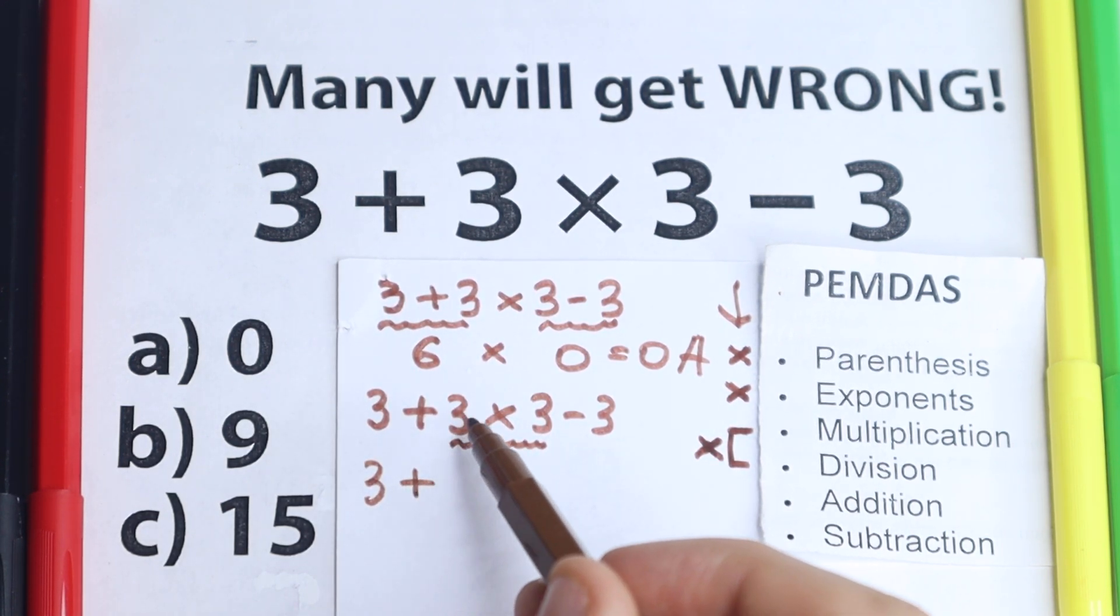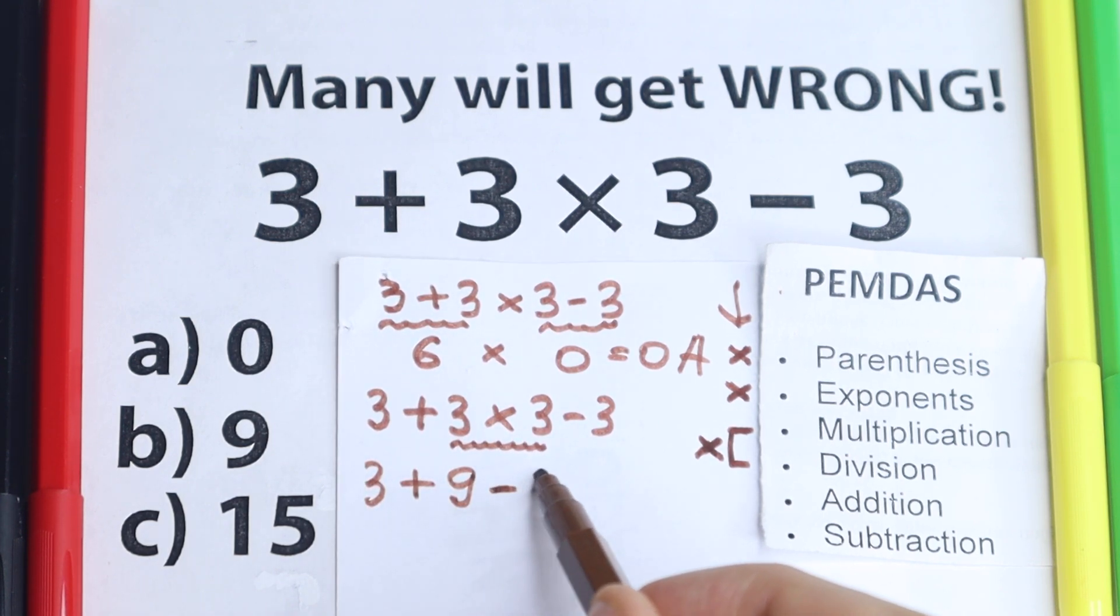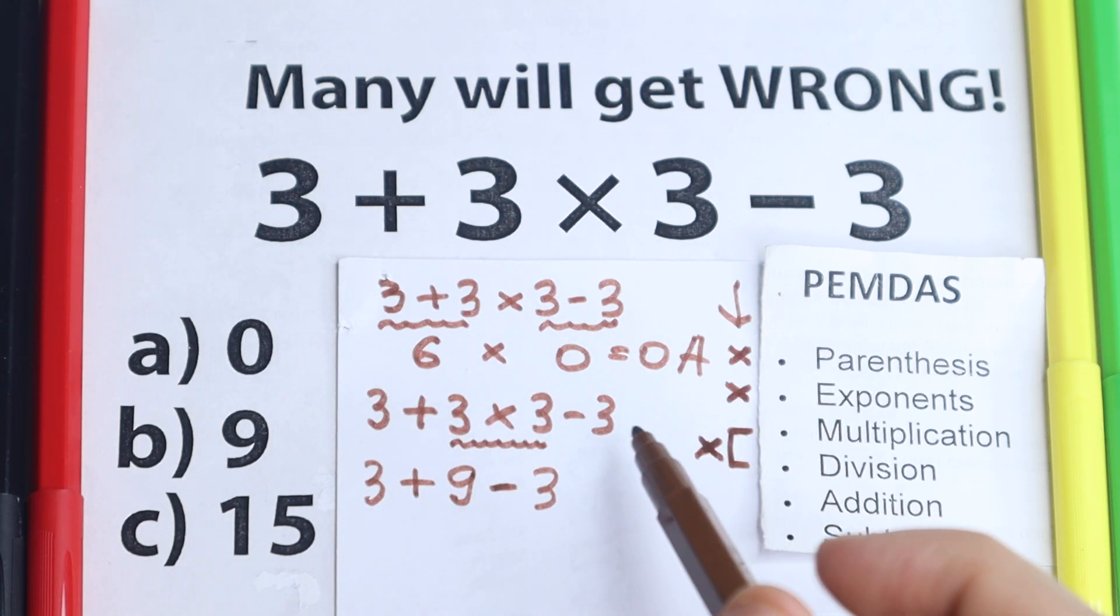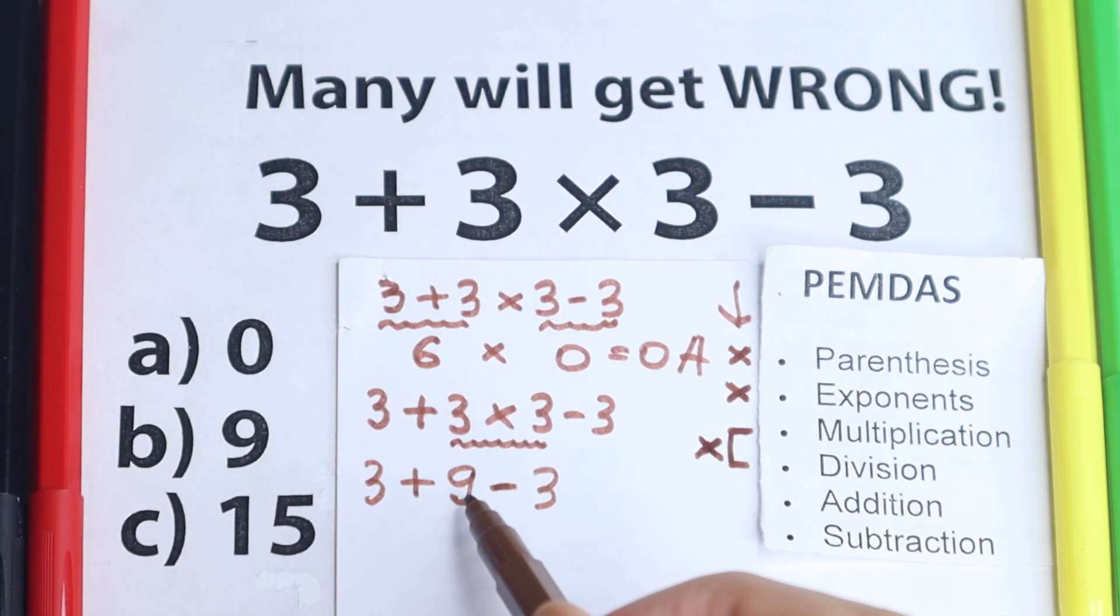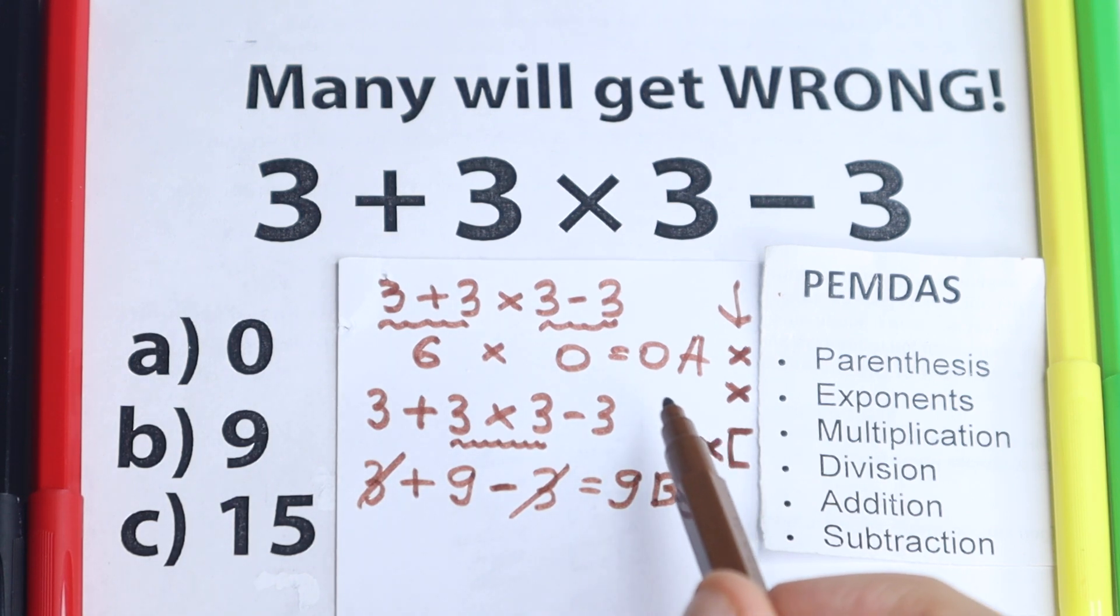We need to solve this because the first step is multiplication. 3 plus 3 times 3 equal to 9, and minus 3. So we need to multiply at first. 3 plus 9 minus 3. We cancel this 3 and we have only our 9, which is option B.